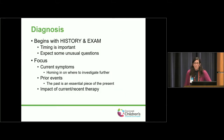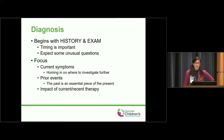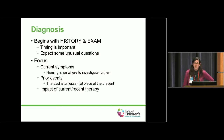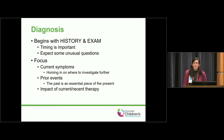We start with a really important history and exam. With kids who have systemic JIA and related manifestations like MAS, timing is really important — we need to understand when things started and how they're progressing. Please expect a lot of unusual questions from us. There are things you may not think are important, but it can depend on whether you went to a petting zoo recently or whether your family does a lot of hunting.